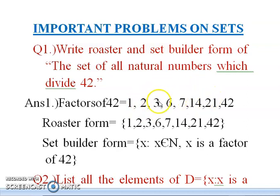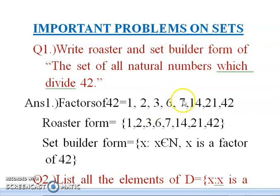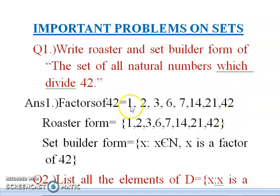Similarly, 3 × 14 = 42, so 3 and 14 are factors. Also 6 × 7 = 42, so 6 and 7 are factors. I already said 14 and 21 are factors, and 42 × 1 = 42. So these are all the factors of 42: 1, 2, 3, 6, 7, 14, 21, and 42.